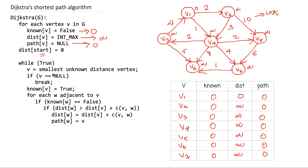We run an infinite while loop that breaks when a certain condition is met. We set v equal to the smallest unknown distance vertex — all vertices are unknown, so the smallest distance is for v1, giving us v equal to v1. Since v is not null, we don't break the loop. We then set known(v1) equal to true, changing its value from 0 to 1.